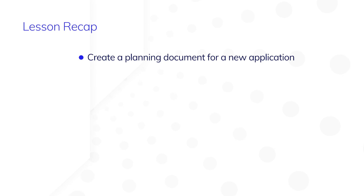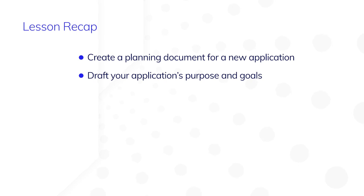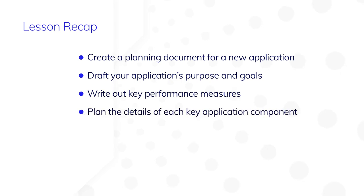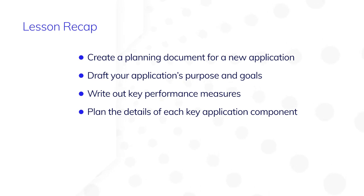Let's recap before ending the lesson. It's a good idea to create a planning document for a new application and begin with a statement of the application's purpose and goals. Add some key performance measures which, if accomplished, paint a picture of success. Now you're ready to plan the details of each key application component: personas and groups, record-based data, process models, and reports.